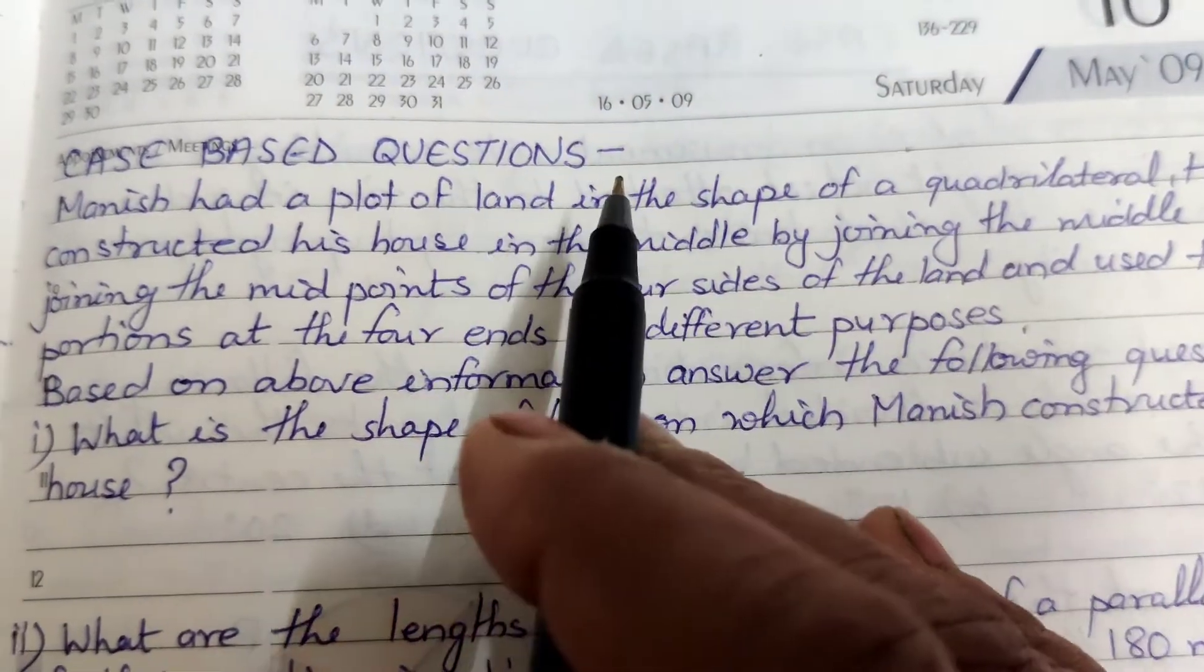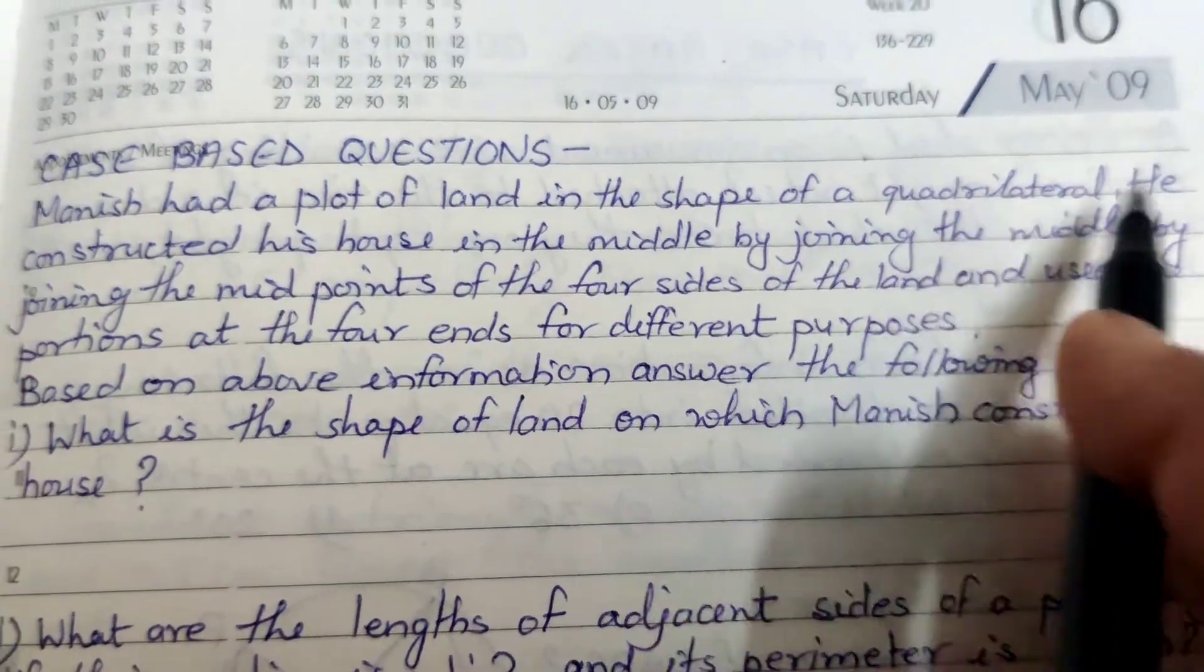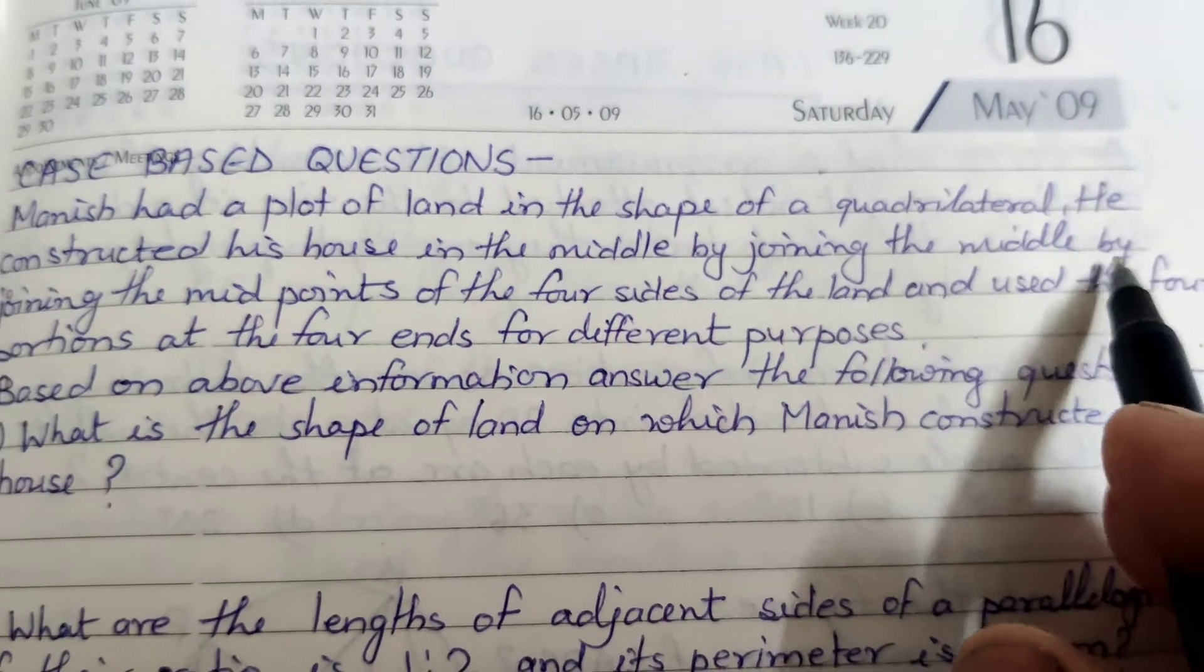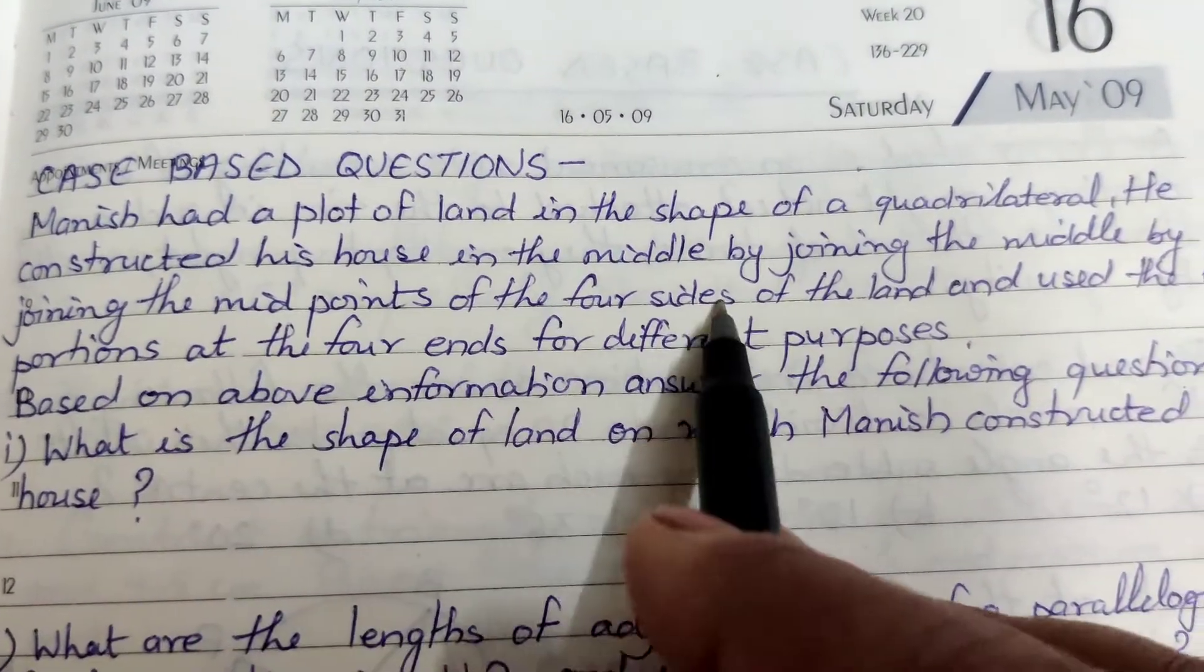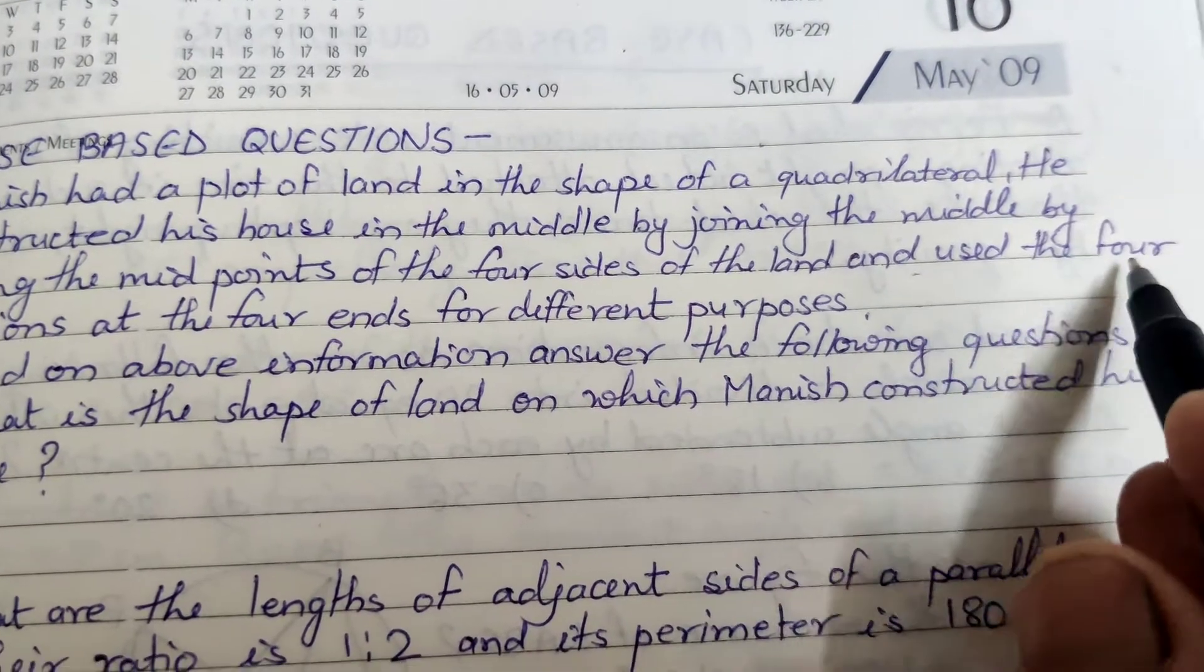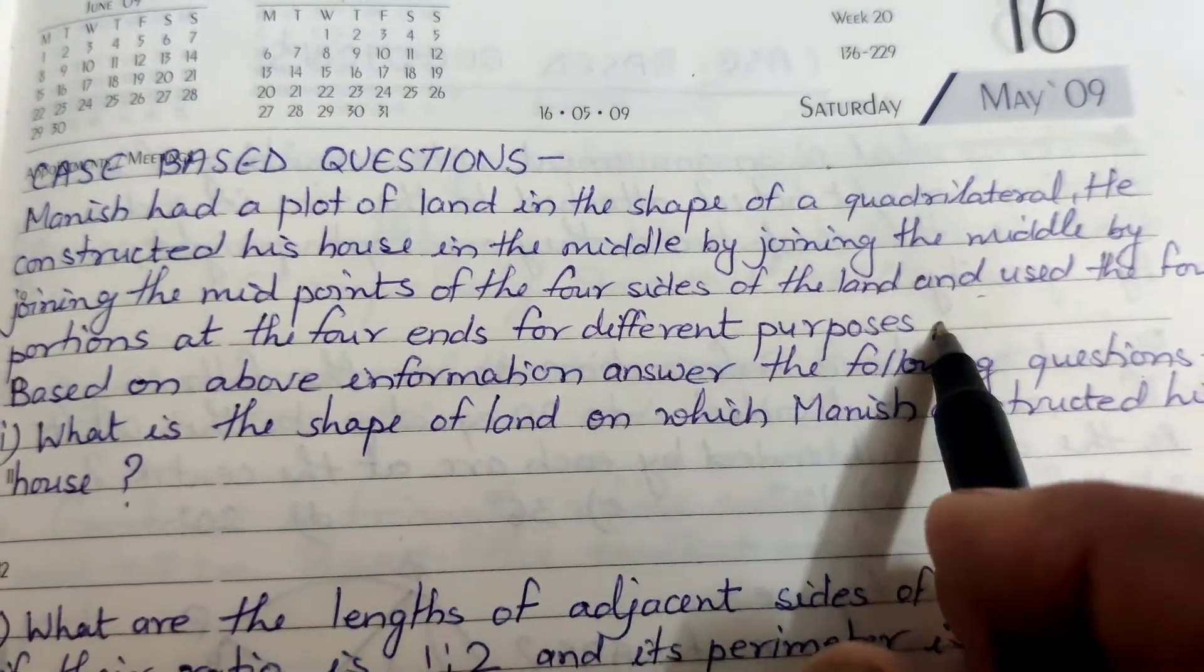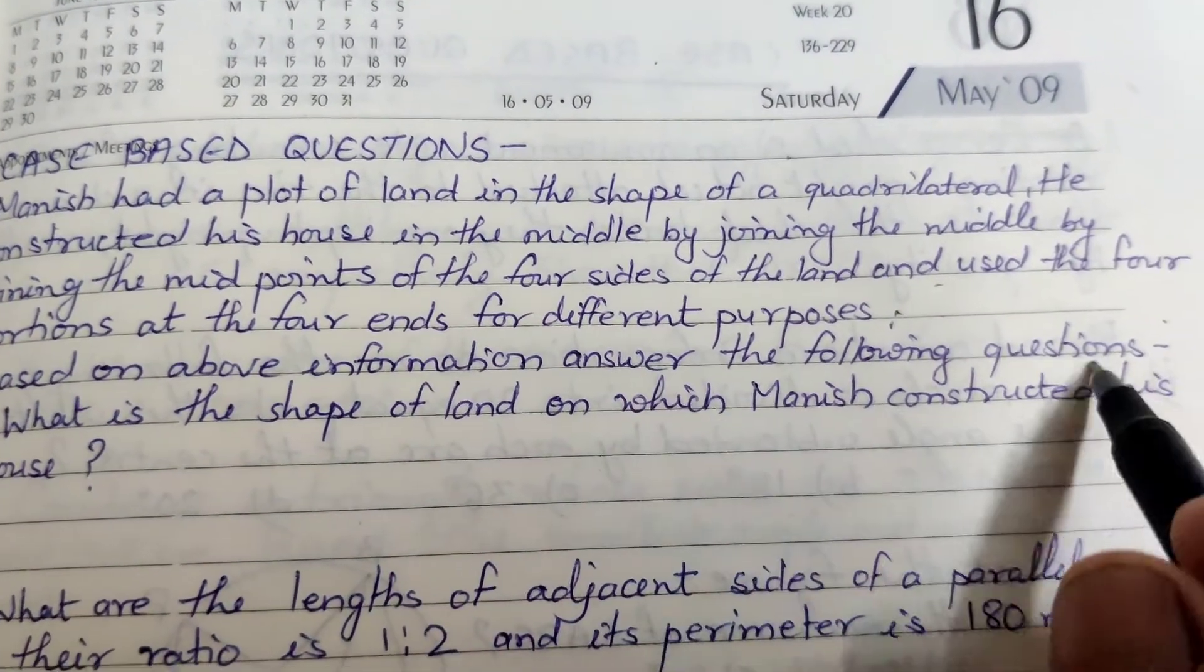This is a question from the chapter on quadrilaterals. Manish has a plot of land in the shape of a quadrilateral. He constructed a house in the middle by joining the midpoints of the four sides of the land and used the four portions at the four ends for different purposes. Based on the above information, answer the following questions.